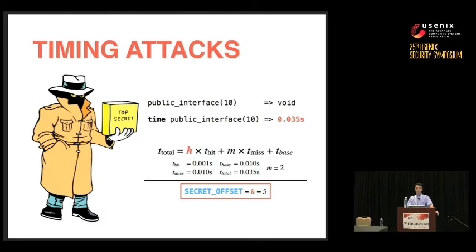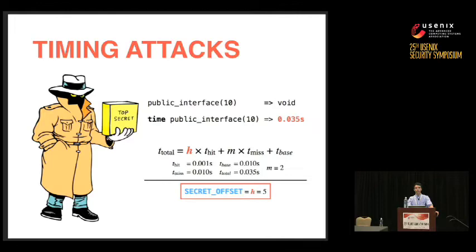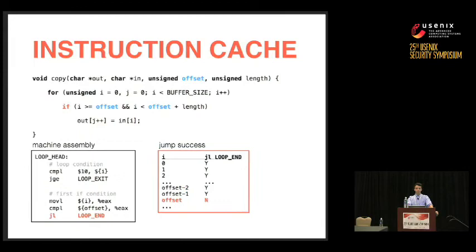The attacker might compute an equation: total time equals the number of cache hits times the cost per cache hit, plus cache misses times the cost per miss, plus some base offset. Given known values for cache hit and miss times, he plugs in the measured total time and solves for the number of cache hits h, computing that the secret offset equals h — say, five. Even over a network with noise, a large enough sample size gives statistical significance.